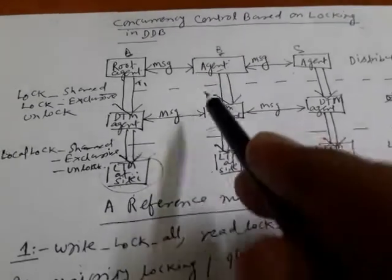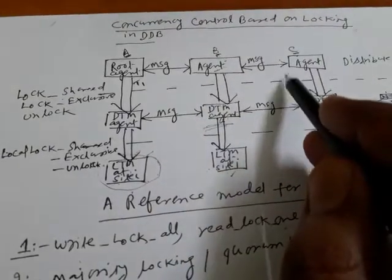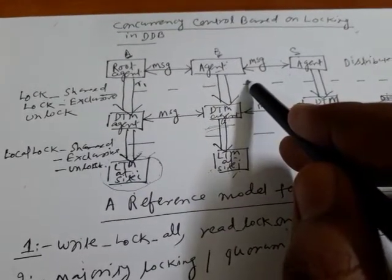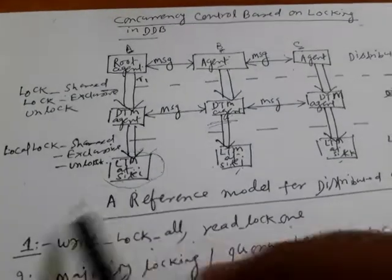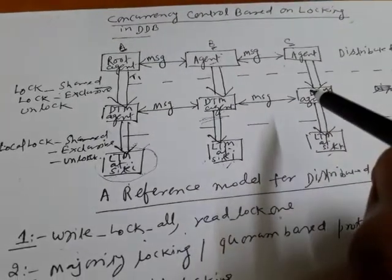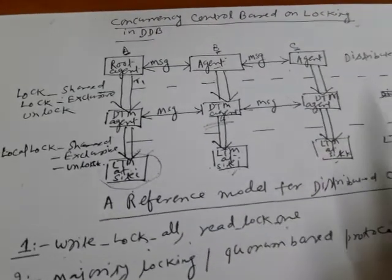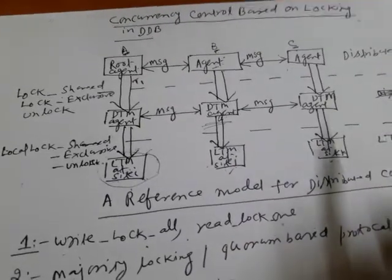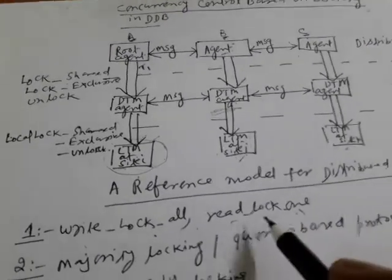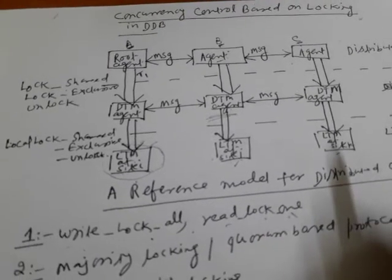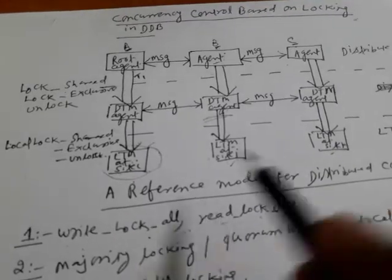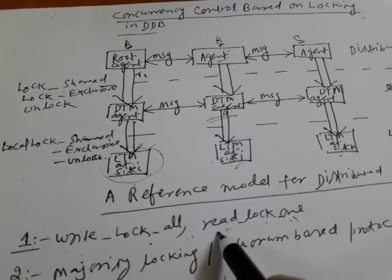'Read lock one' means if D or E exists in four locations, at any one location I can go for a read or share lock — not all four locations need a share lock. But wherever B and C exist, say in five locations, at all five locations we must perform an exclusive lock. If B and C exist in 100 locations, we must lock all 100; for a read on D existing in 100 locations, at least one read lock is sufficient.